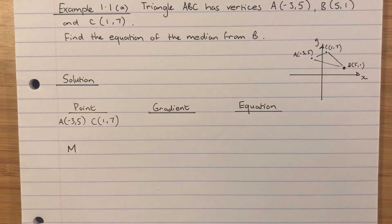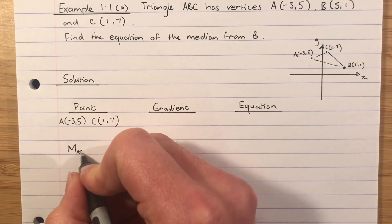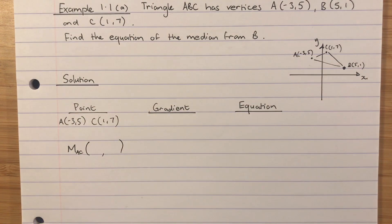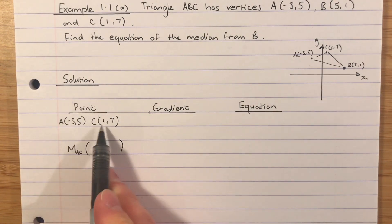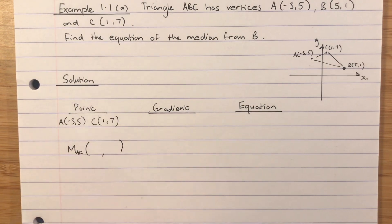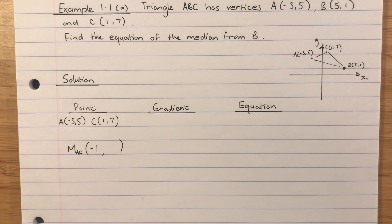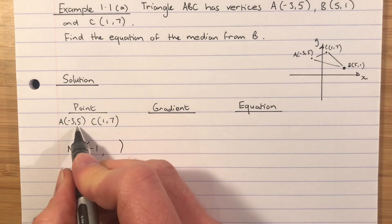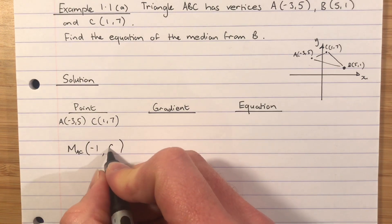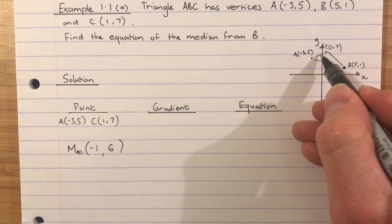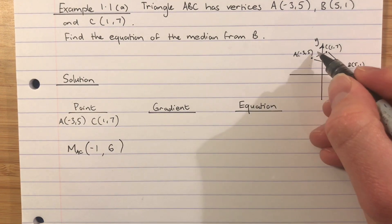I'm going to find the midpoint of those two. Standard notation is capital M for midpoint, subscript AC to tell me what I'm finding the midpoint of. Add my two x's, divide by 2: -3 + 1 = -2, divided by 2 is -1. Add the two y's: 5 + 7 = 12, divide by 2 is 6. So I've now found the midpoint of AC.